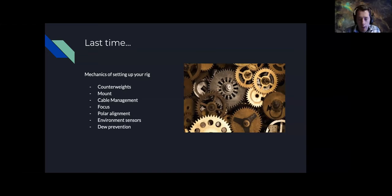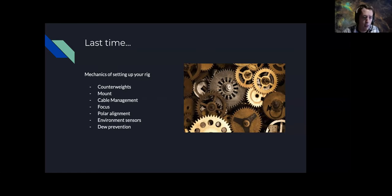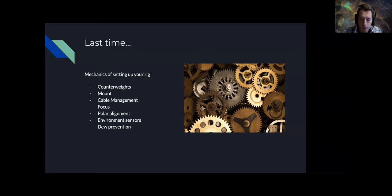Last session covered physical limitations of your rig: where to put counterweights, mount capacity, mount specifics like periodic error, cable management, how to achieve good focus, polar alignment, environmental sensors, and dew prevention. All of that fell under setting everything up except the acquisition part — the telescope, the cameras, anything like that.